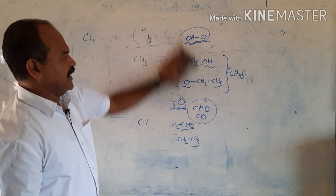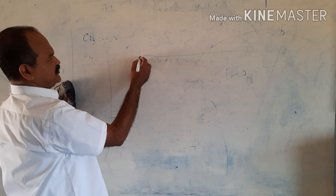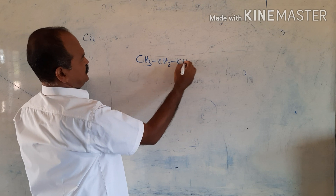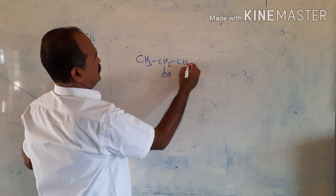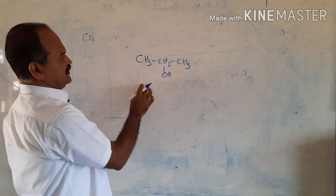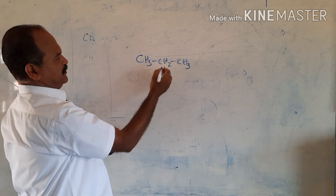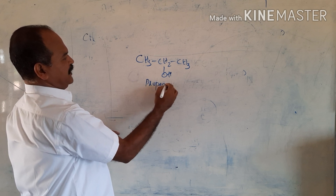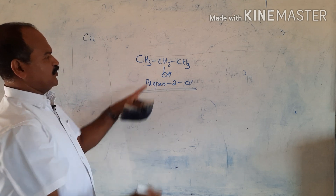In the same way, functional isomers can be identified. Let's look at the first example: CH3CH2CH3 with an OH group — this is a propanol. The name is propan-2-ol. This is a functional isomer.